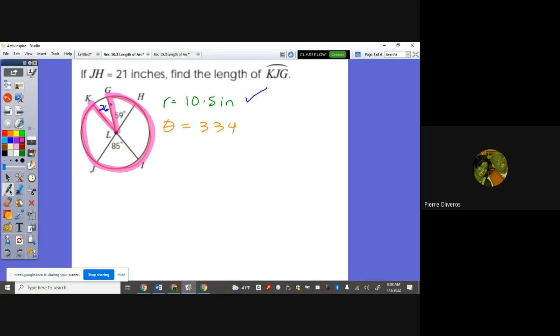Applying the formula here, length is 2π times 10.5 times theta which is 334 divided by 360 degrees. So 2 times π times 10.5 times 334 divided by 360, that gives me 61.21 inches.